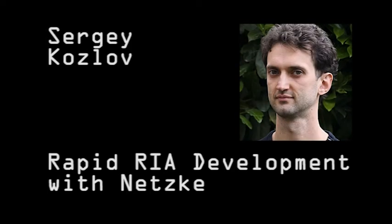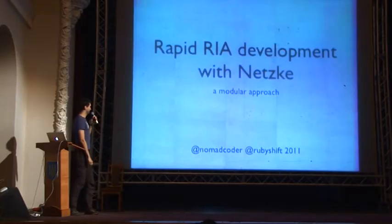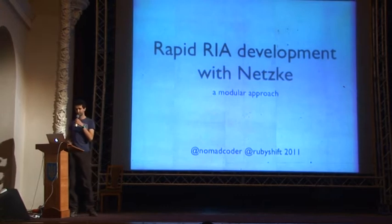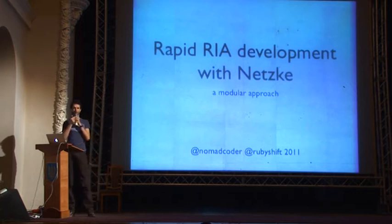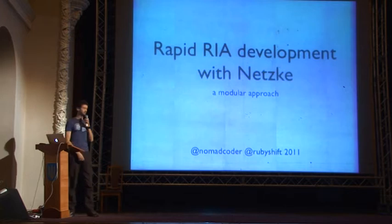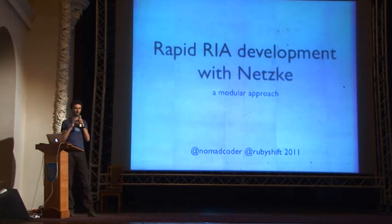My name is Sergei Kozlov, or Sergei Kozlov — whatever is easier for you to pronounce. Also known as Nomad Coder, and I'm a freelance Rails developer for the past four years. I like changing places, hence the nickname. For the past three years I've lived in about eight countries, and by living I mean spending there from a month to a year.